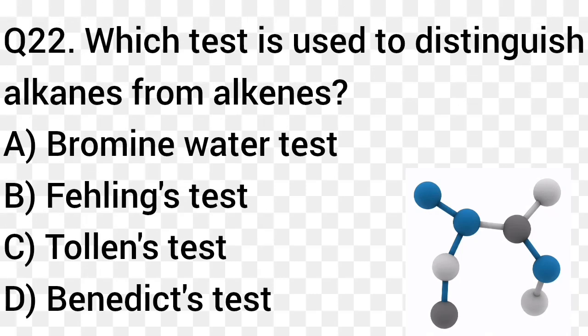Question number 22. Which test is used to distinguish alkanes from alkenes? Option A: Bromine water test. Option B: Fehling's test. Option C: Tollens test. Option D: Benedict's test. The right answer is option A, Bromine water test.